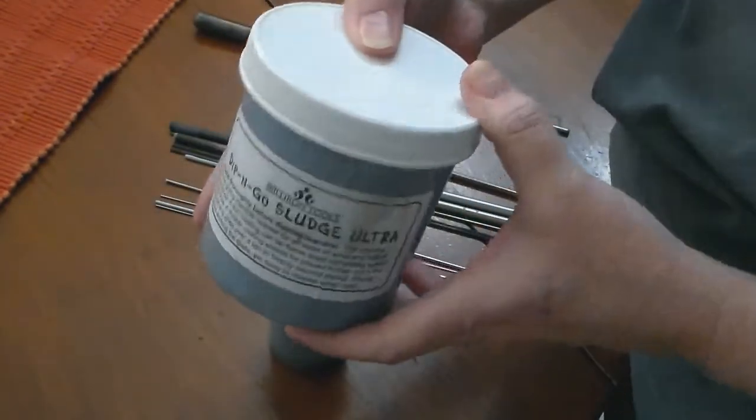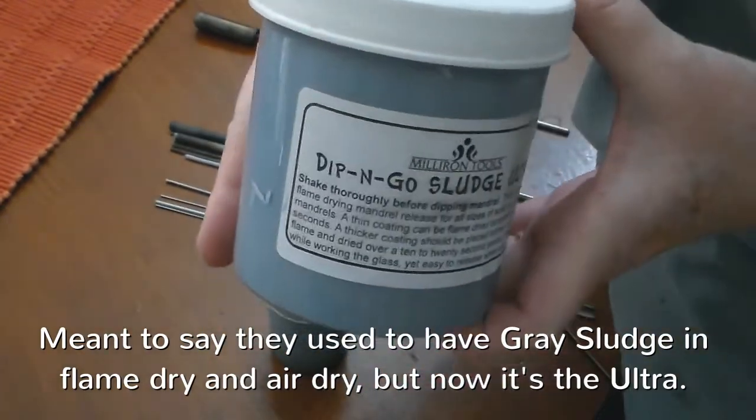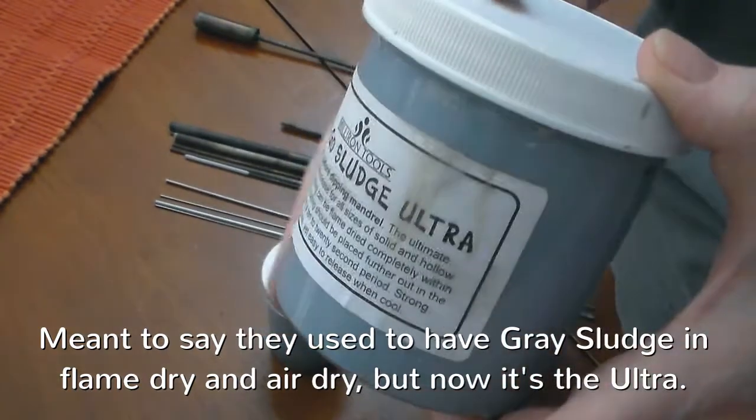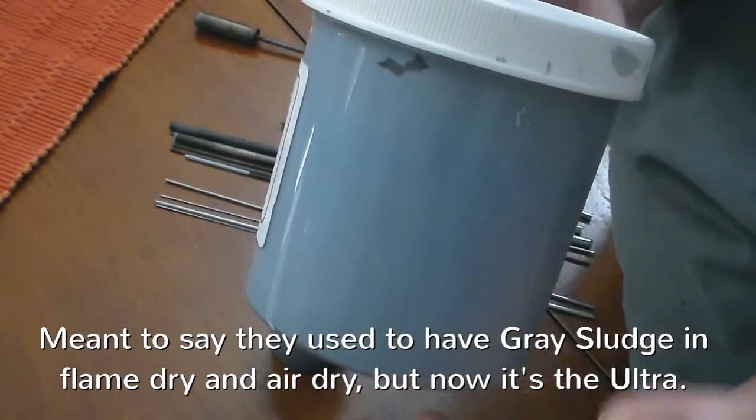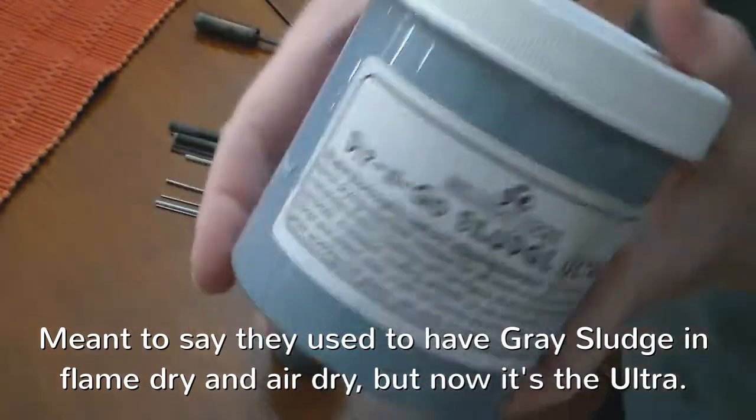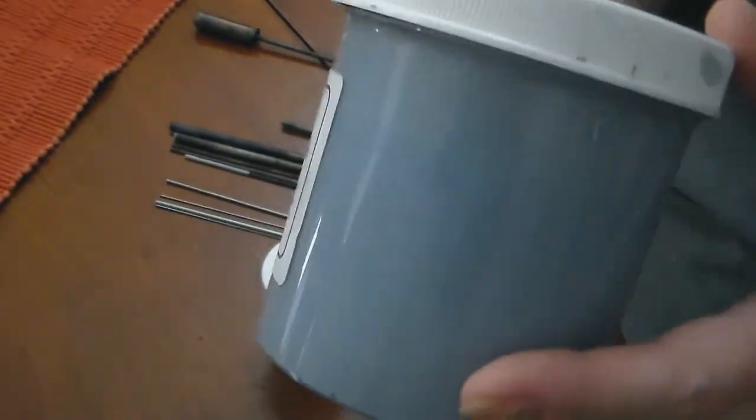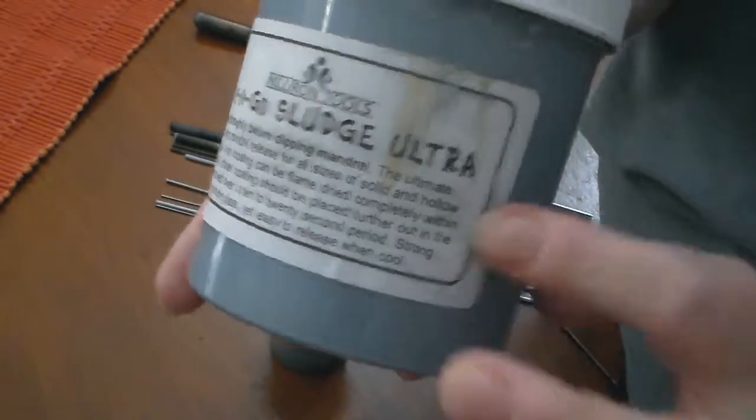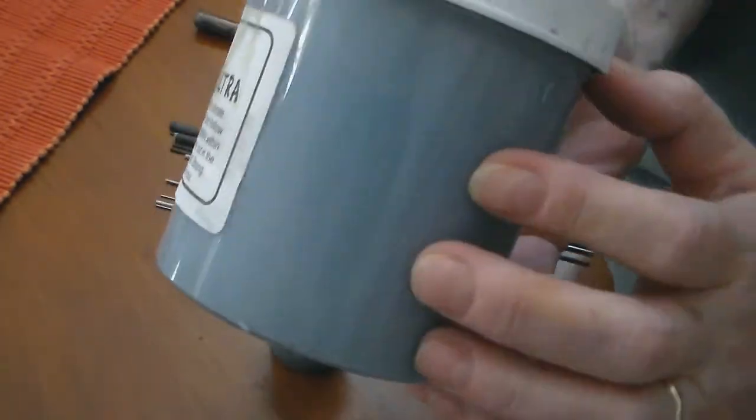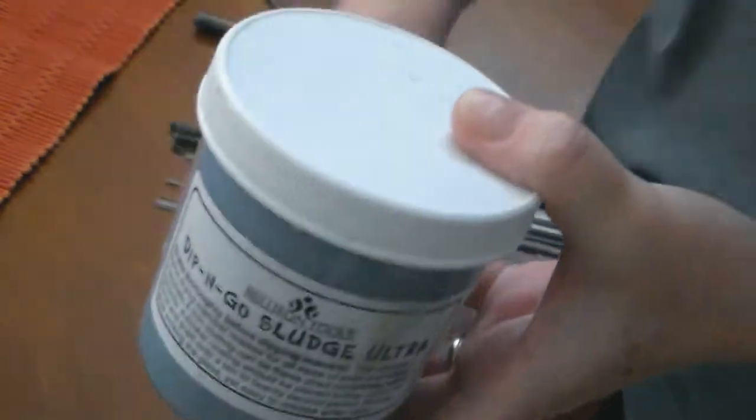And so my favorite bead release, and I've used a lot over the years, is the Dip and Go Sludge Ultra. They used to have just regular sludge and blue sludge, and now they just have the Sludge Ultra. And I get mine at Aero Springs. They're the ones who make it. And it's like this blue-gray color. They also have a Dip and Go Blue Sludge, which is even stronger than this bead release, and that's more for like Boro. So, but this one works great. I love it.